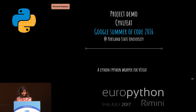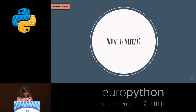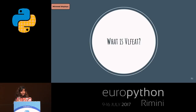The project demo: last year I worked for Portland State University for Google Summer of Code. The project is CyVL-feat, a wrapper for a library named VLfeat. VLfeat is a popular computer vision algorithms library specializing in image understanding and local feature extraction and matching. Algorithms include SIFT (Scale-Invariant Feature Transform), K-means, Hierarchical K-means, SLIC superpixels, and Quick Shift superpixels.